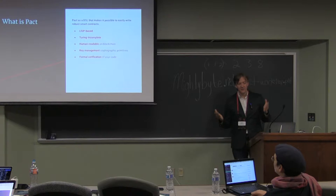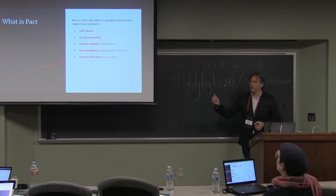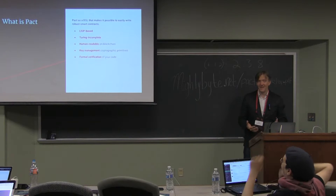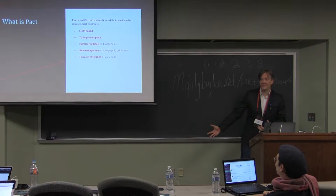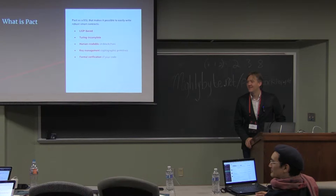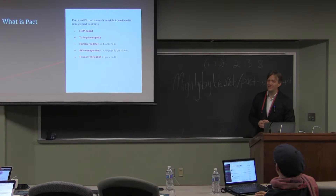So, Pact. What is Pact? It's a DSL that makes it possible to easily write robust smart contracts. A few notable characteristics: it's Lisp-based, it's Turing incomplete, and it is human-readable. I think human-readable is actually a really significant thing. If you want to go figure out what something does on the Ethereum blockchain, all you have is bytecode, and then you have to decompile that. So I think the human-readable component is definitely the right choice.